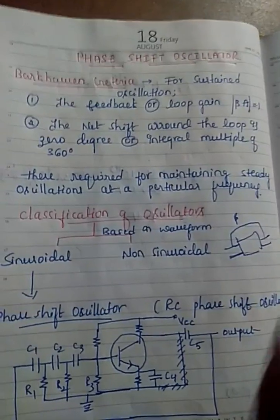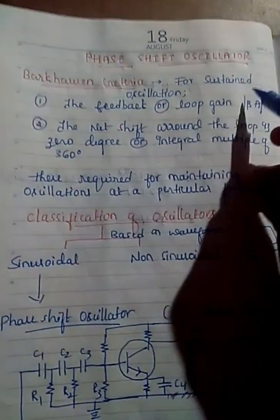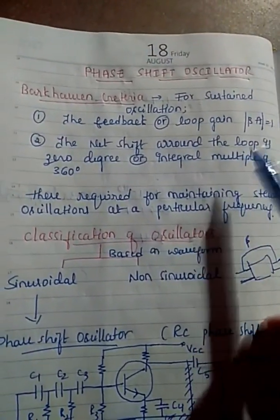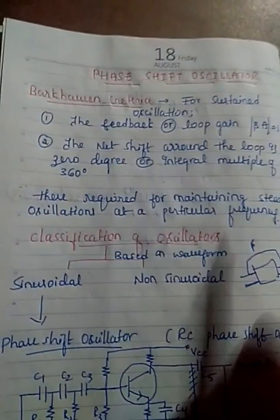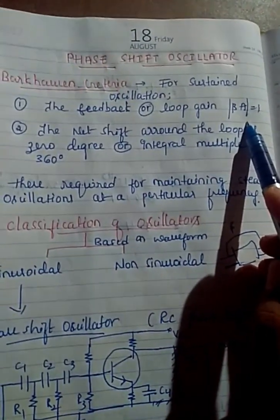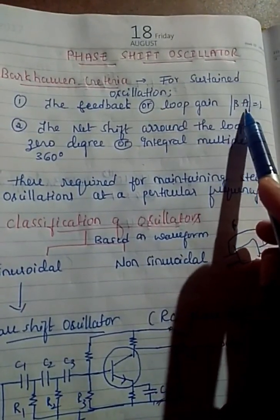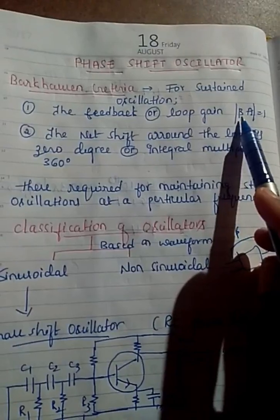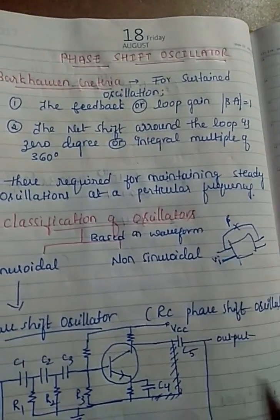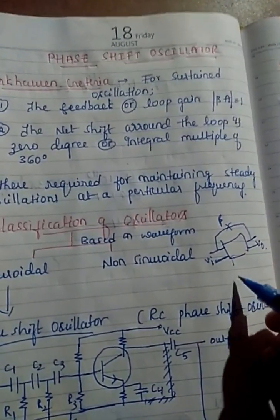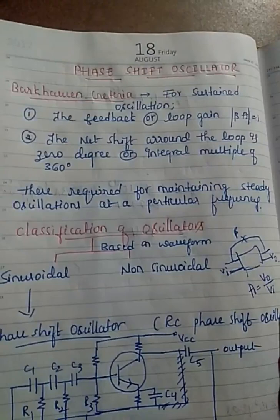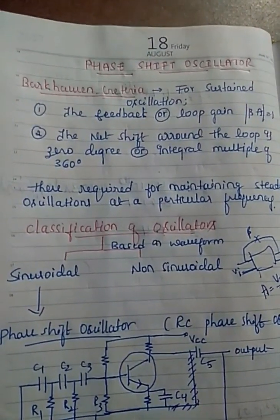The Barkhausen criteria explains that for a sustained oscillation — sustained meaning constant oscillation — the loop gain of the oscillator should be equal to one, that is unity. The loop gain is the open loop gain 'A' multiplied by the feedback 'beta'. Open loop gain is V0 divided by Vi, where Vi is the input voltage and V0 is the output voltage — that is the open loop gain.